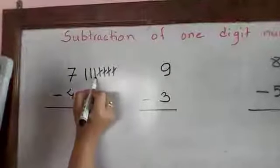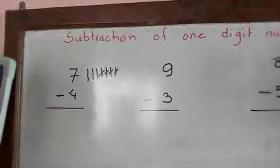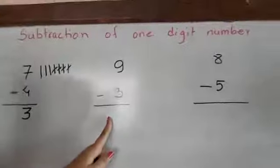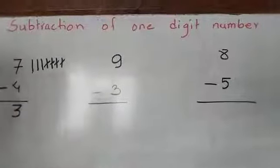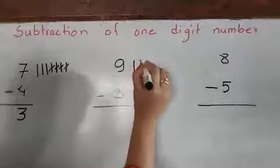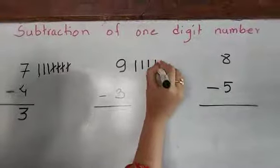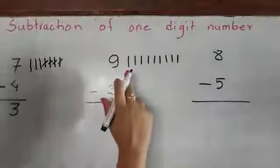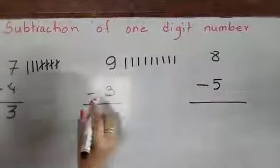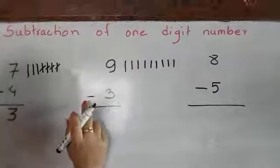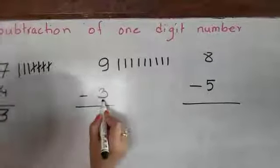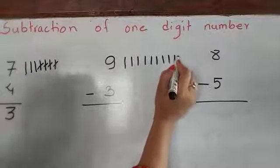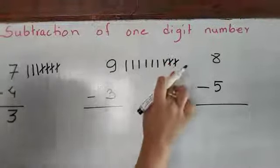Okay, so we have drawn 9 sticks: 1, 2, 3, 4, 5, 6, 7, 8, 9. And this sign says to minus. So I am going to draw a line for 3: 1, 2, 3.